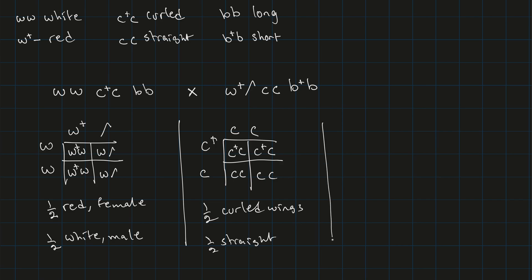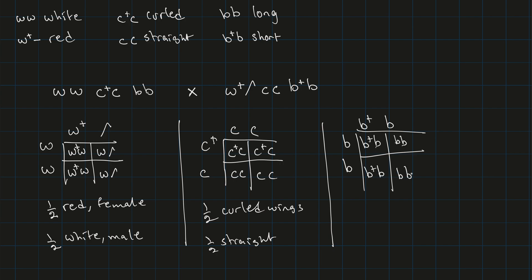For bristles, the female is homozygous recessive for long bristles, and the male is heterozygous, giving him short bristles. Doing the Punnett square, half the offspring are heterozygous (short bristles) and the other half are homozygous recessive (long bristles). So one half short, and one half long.